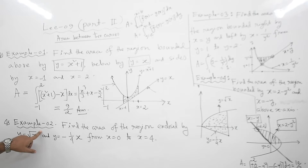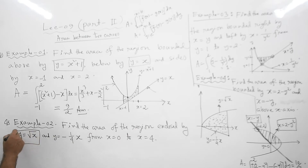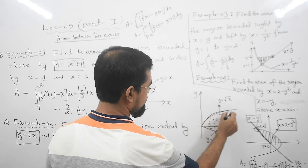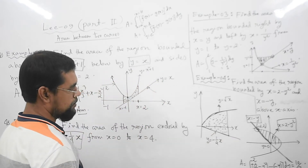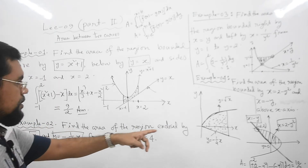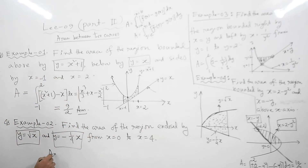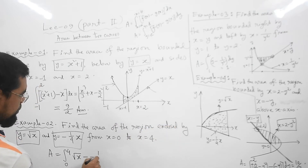Now let's try to understand Example 2. It says find the area of the region enclosed by two curves: y = √x and y = -x/4. We can see y = √x is this curve and y = -x/4 is this curve, and we need to calculate the area of this region from x = 0 to x = 4. Here also we need to use Formula 1.